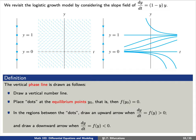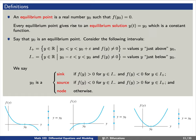An equilibrium point is a real number y₀ such that f(y₀) = 0, and every equilibrium point gives rise to an equilibrium solution y(t) = y₀ as a constant function. We'll say y₀ is a sink if f(y) > 0 just below y₀ and f(y) < 0 just above y₀ — that is, f(y) appears to be decreasing. We'll say y₀ is a source if f(y) < 0 just below y₀ and f(y) > 0 just above y₀ — that is, f(y) appears to be increasing. Otherwise, we say y₀ is a node.